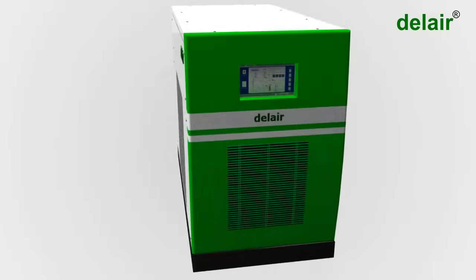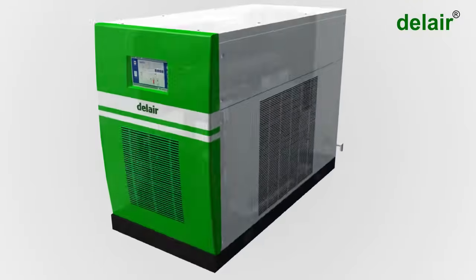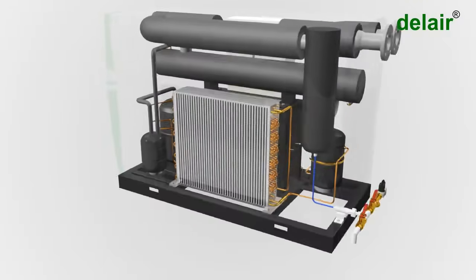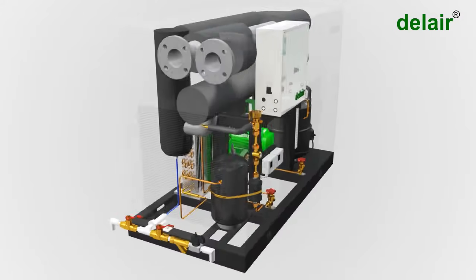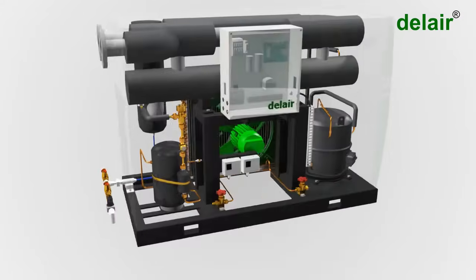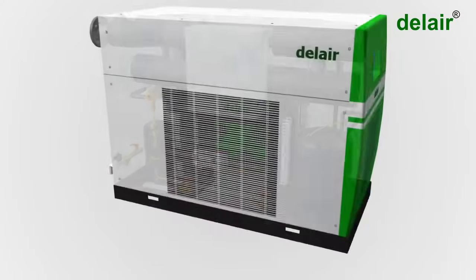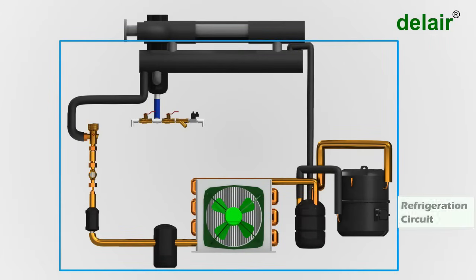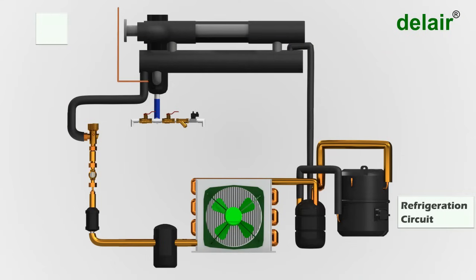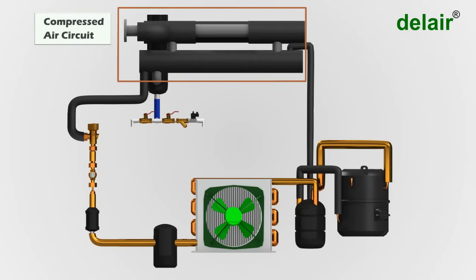Del Air Refrigeration Type Dryer operates on the method of cooling the air to near freezing point to remove the moisture. The refrigeration dryer consists of two circuits: refrigeration circuit and compressed air circuit.